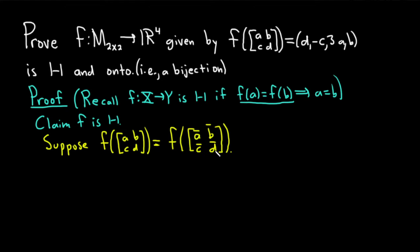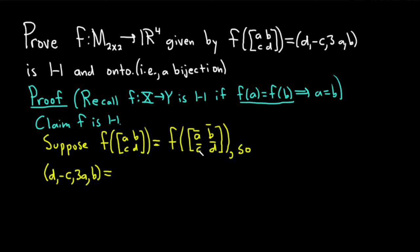The only thing we can do is use the definition of our function. Applying f to the first matrix gives (d, -c, 3a, b), and applying f to the second matrix gives (d̄, -c̄, 3ā, b̄).